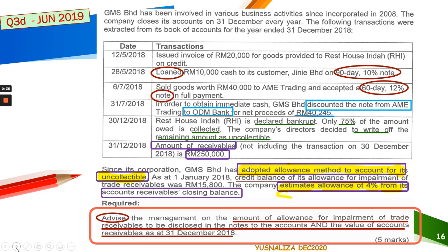We are going to look at how to advise the management on the allowance for impairment, which is the requirement of the question. We're going to do this in this session.